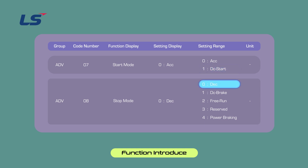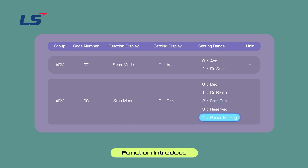DEC Stop method is a general deceleration stop method. If there is no separate function selection, it decelerates to 0 Hz and stops, reflecting the deceleration time. The DC Brake stop method can be used when you want to stop the motor by applying DC voltage at the set frequency during deceleration. Free Run stop method blocks the AC drive output when the operation command is turned off. Power Braking stop method controls the deceleration slope or re-accelerates to reduce regenerative energy when the AC drive DC voltage rises above a certain level due to motor regenerative energy.